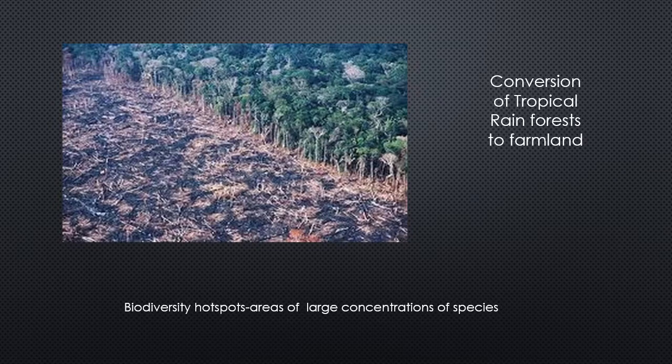Another example of habitat loss is conversion of tropical rainforests to farmland. The tropical rainforest is a biodiversity hotspot — an area with a large variety of species, super high biodiversity all concentrated into one area. People get upset when biodiversity hotspots are converted for human purposes.